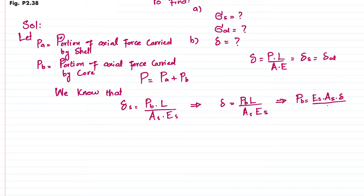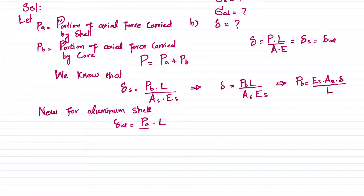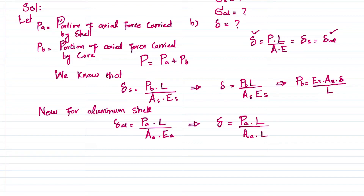For the aluminum shell, the deformation is: δ_a = Pa·L / (Aa·Ea). Since δ = δ_a, we get δ = Pa·L / (Aa·Ea), which gives us the load carried by the aluminum shell: Pa = (Ea·Aa·δ) / L.